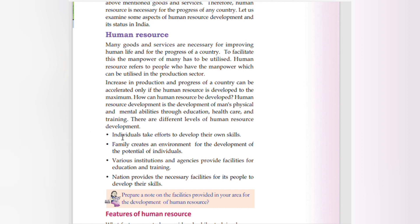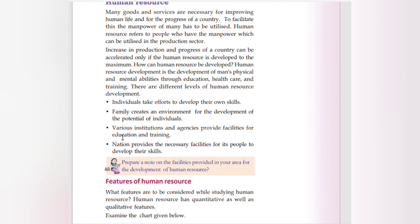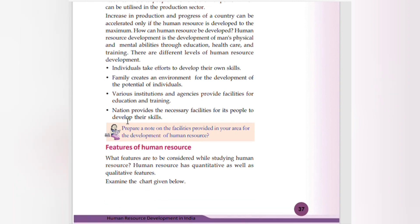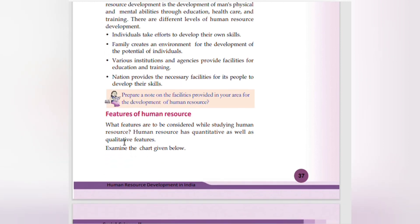There are different levels of human resource development. At the individual level, people take efforts to develop their own skills. The family creates an environment for the development of the potential of individuals. Various institutions and agencies provide facilities for education and training. The nation provides the necessary facilities for its people to develop their skills.